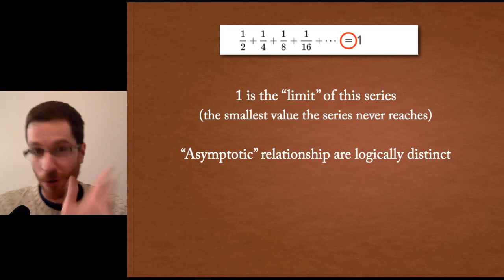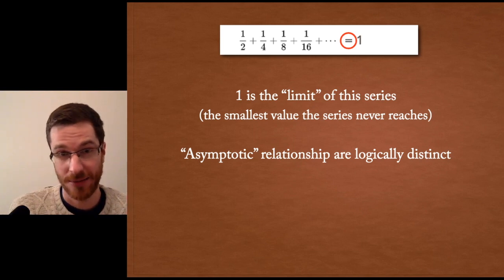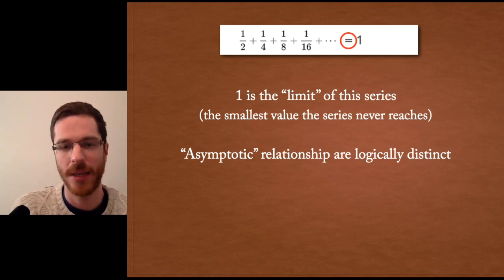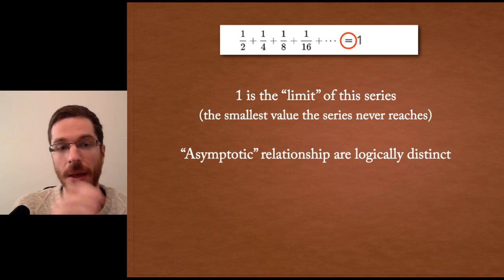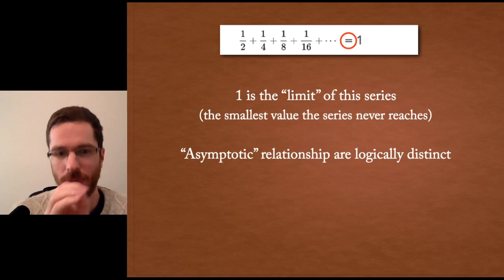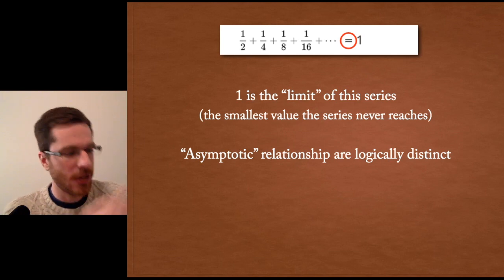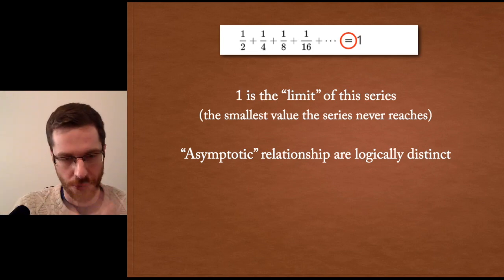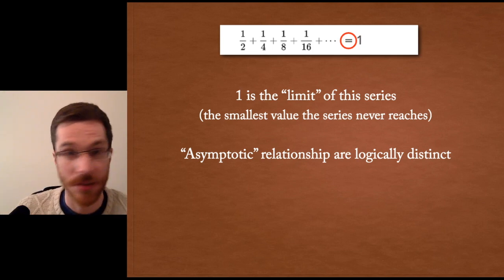Another word that's used to describe this is an asymptotic relationship, which I'll illustrate in a way that people will be able to grasp in just a second. The point is that asymptotic relationships, this getting close to a value but never reaching a value, is explicitly logically distinct from normal summation.